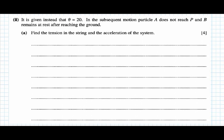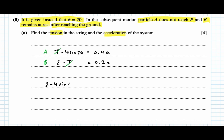Now θ is given as 20 degrees, A does not reach P, and B remains at rest after reaching the ground. We write two equations of motion: T − 4 sin 20 = 0.4a for A, and 2 − T = 0.2a for B. Cancelling T gives 2 − 4 sin 20 = 0.6a, so acceleration a = 1.05 m/s². Substituting back gives tension T = 1.79 newtons.